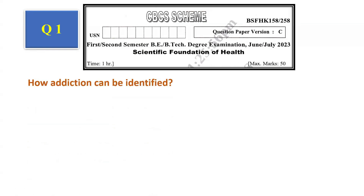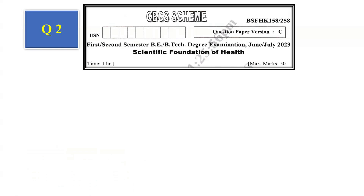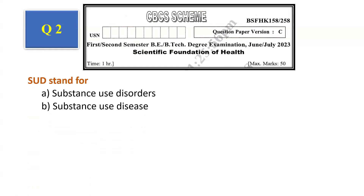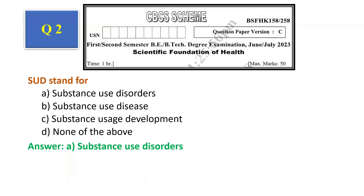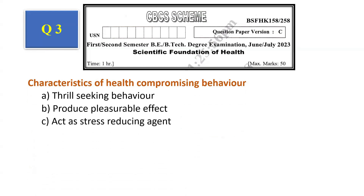Question number 1: How can addiction be identified? Options: lack of control, decreased socialization, both A and B, none of the above. The answer is both A and B, that is option C. Question number 2: SUD stands for — substance use disorder, substance use disease, substance usage development, none of the above. The answer is substance use disorder, that is option A.